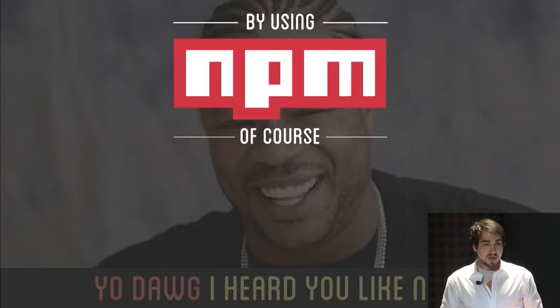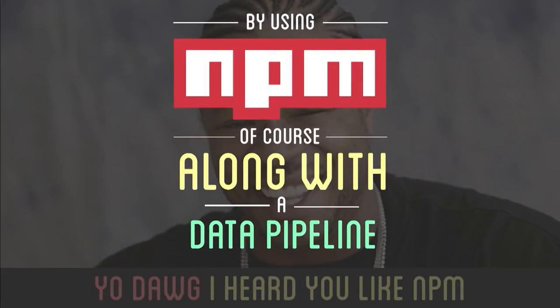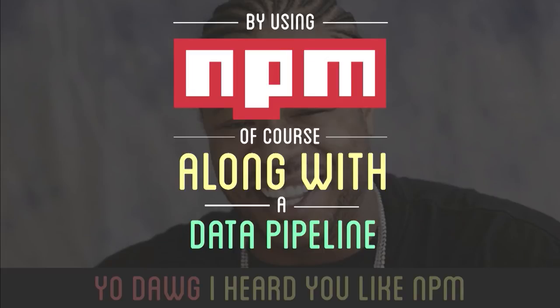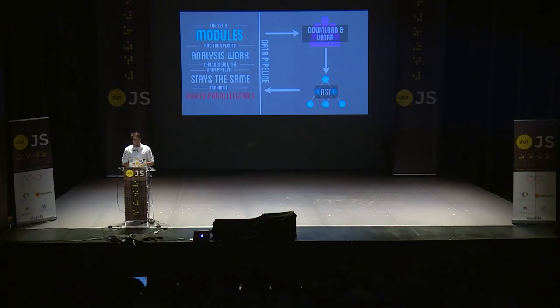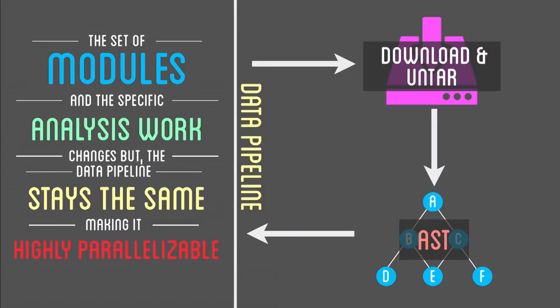So how do we do this? By using NPM along with a data pipeline. In order to do this analysis, we have a very standard set of things we need to do: get some set of vertices from the dependency graph, download and untar those modules, turn those into an abstract syntax tree, and then perform some sort of arbitrary computation on them. The things that stay the same across any set of modules means the analysis work changes but the data pipeline stays the same, making it extremely parallelizable.